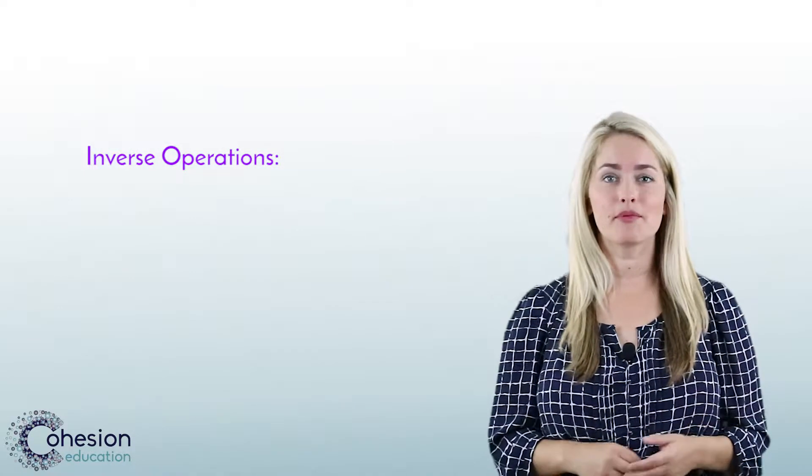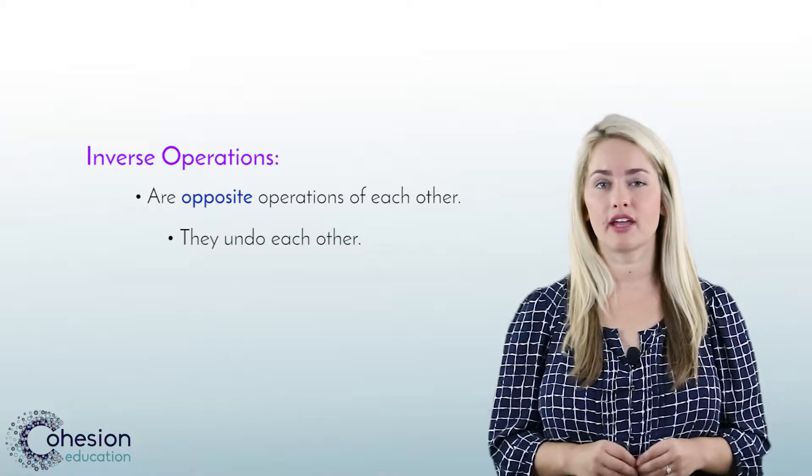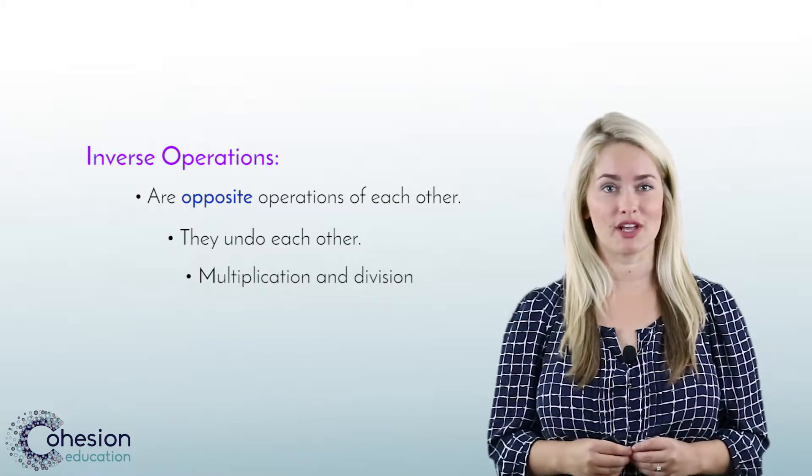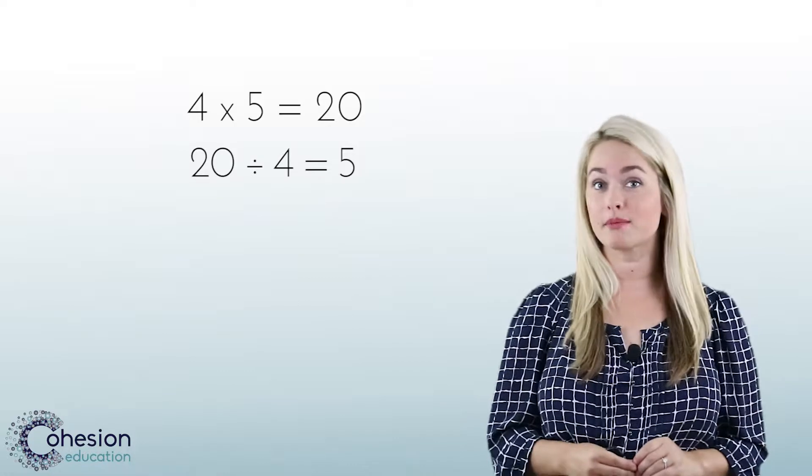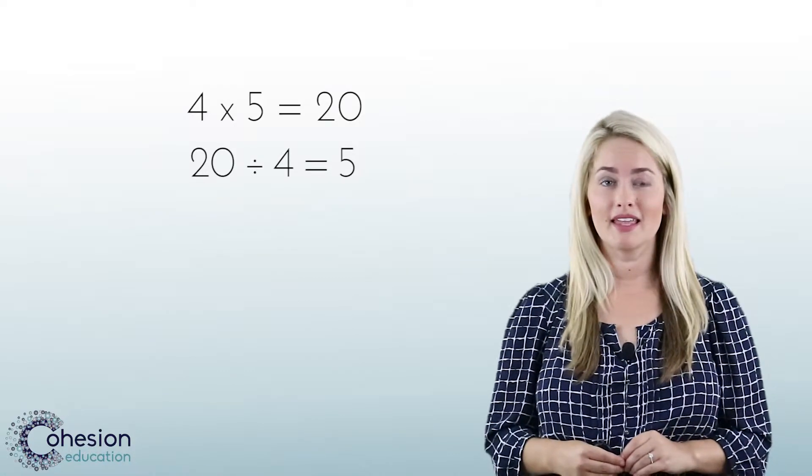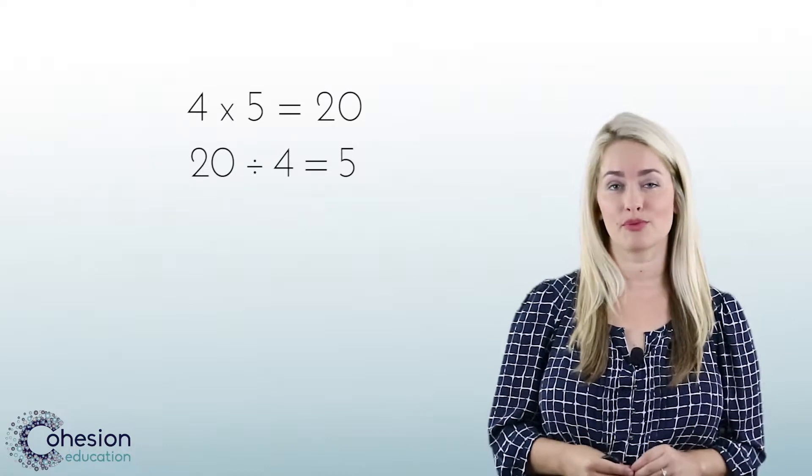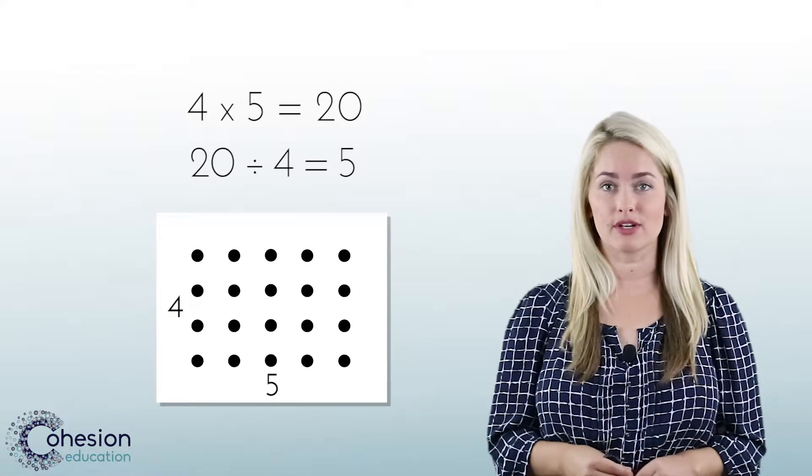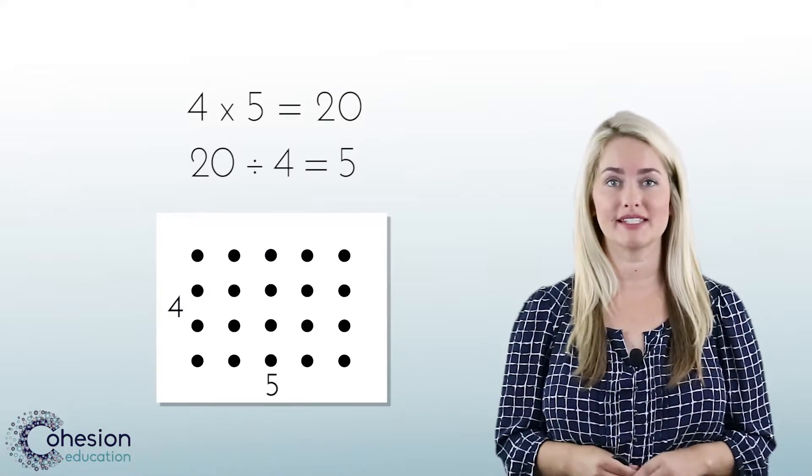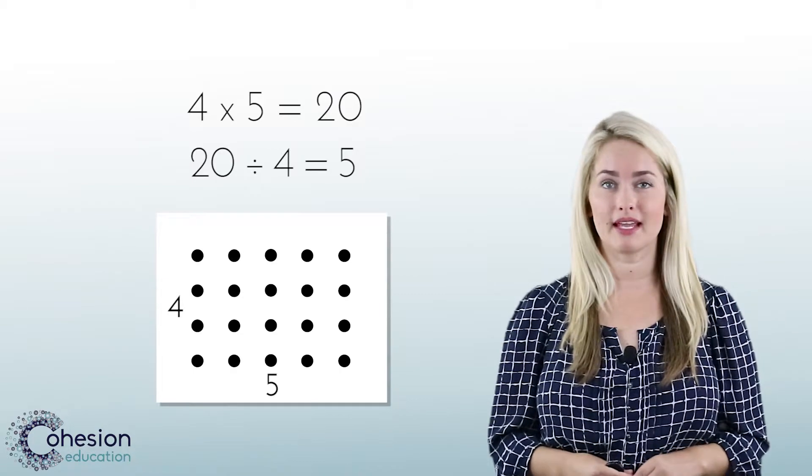An inverse operation is one that is the opposite of or undoes another operation. Multiplication and division are inverse operations. Students can use arrays to help them model the inverse relationship between multiplication and division. They may also use multiplication facts they know to help them solve division problems. An array is a diagram or the use of counters to place the same number of objects in each row. Counters are small objects that can be manipulated by hand.